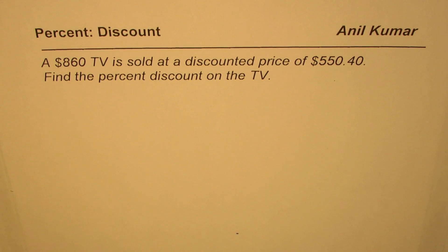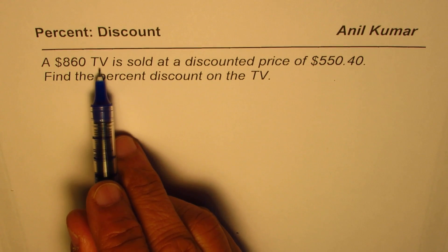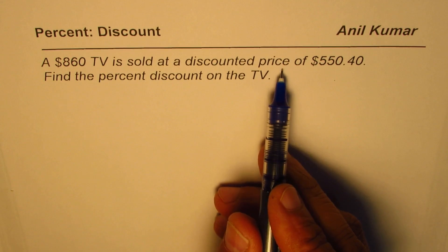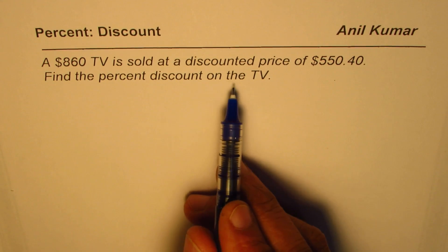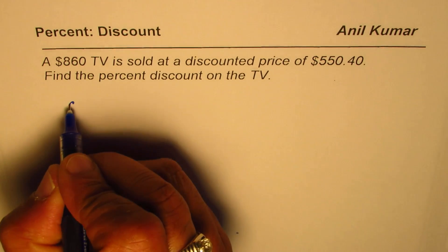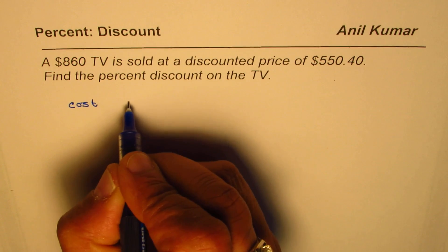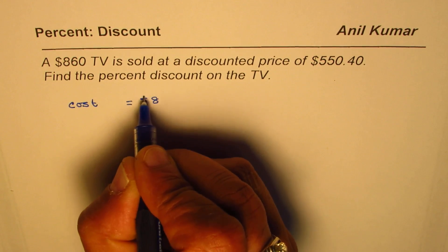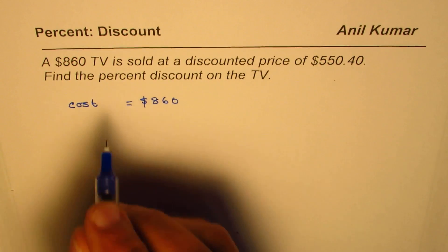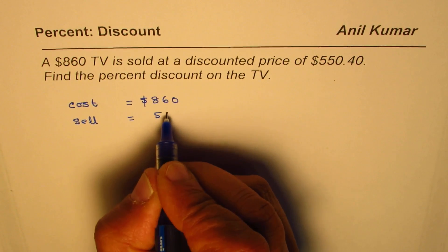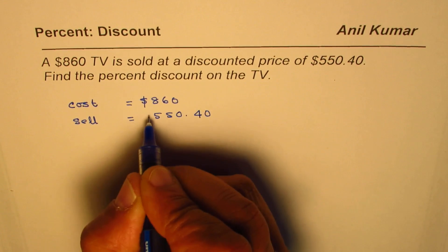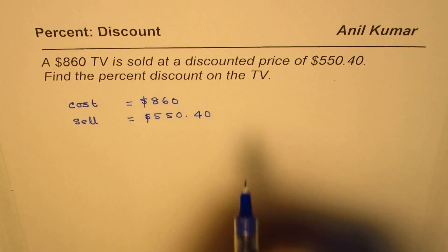I'm Anil Kumar. Let us understand discount or percent discount in this video. A $860 TV is sold at a discounted price of $550.40. Find the percent discount on the TV. In this question, we are given the cost price: cost of TV is $860. The discounted price means the selling price, so it sells for $550.40. We need to find the percent discount.